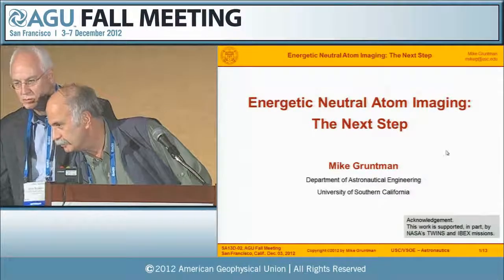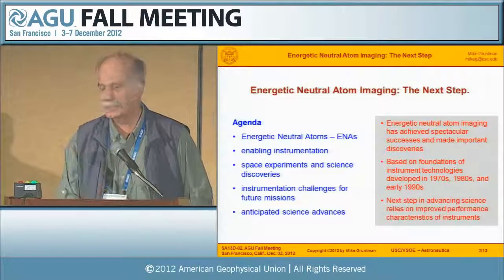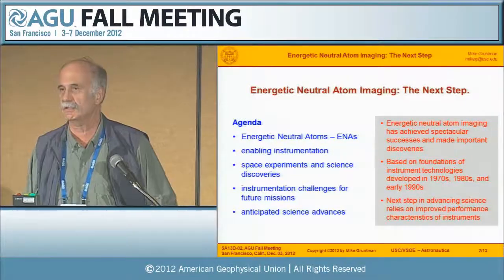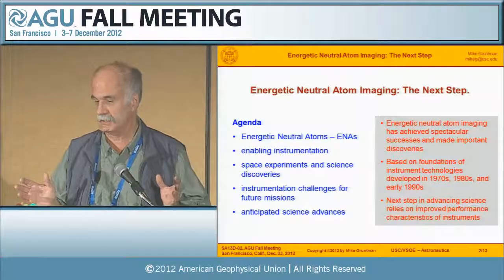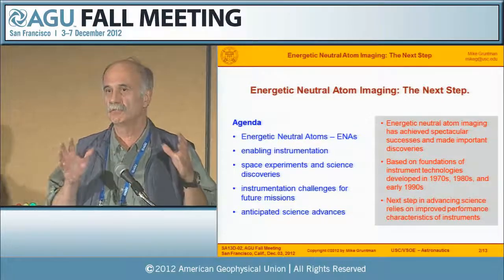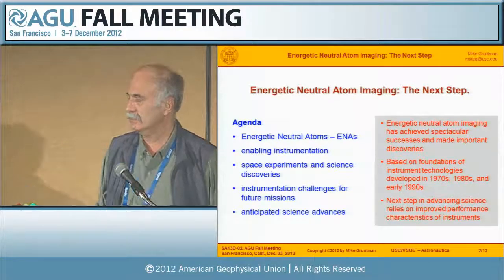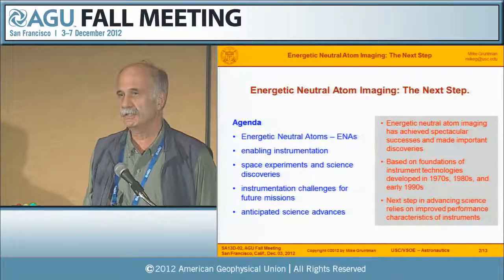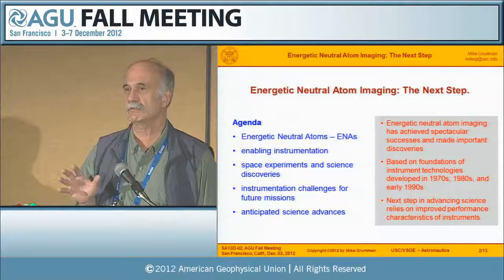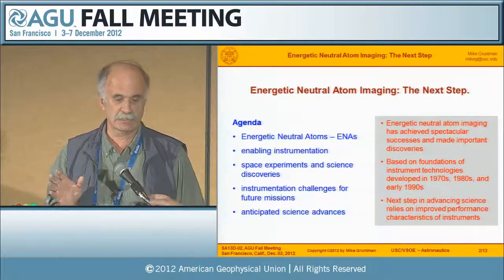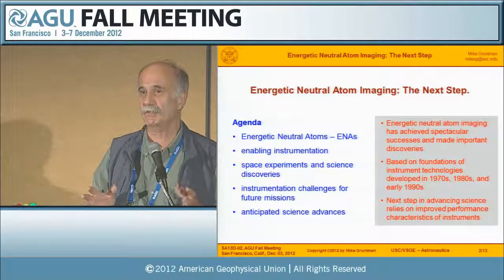So the ENA imaging — the next step. I will start briefly describing energetic neutral atoms and the instrumentation that enabled us to get where we are today, and then what happened in terms of experiments and science discoveries. After that, I will focus on the challenges to improving the instrumentation that will bring the next step in advancing science. ENA imaging is a relatively recent development in space physics, with tremendous successes already. What has been done so far was based on instrumentation development done in the 1970s, 80s, and early 1990s, so the next step in science advancement will depend on how we advance instrumentation further.